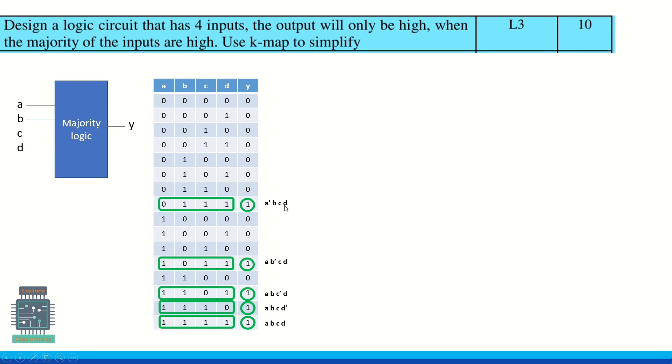So for that if we write the expression we get: a bar b c d, a b bar c d, a b c bar d, a b c d bar, and a b c d are the expressions. But here they have asked to use a K-map to simplify.